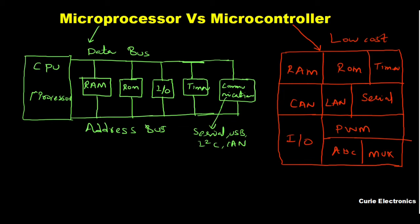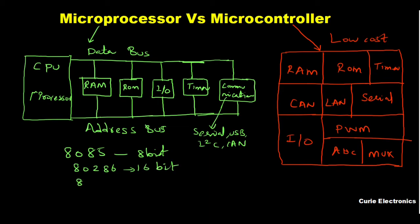Now let's look at popular microprocessors. The 8085 was one of the popular 8-bit microprocessors. Then we had the 80286, which is a 16-bit microprocessor, and the 80486, which is a 32-bit microprocessor. Then we had the Pentium series, and nowadays we have octa-core processors and many more.